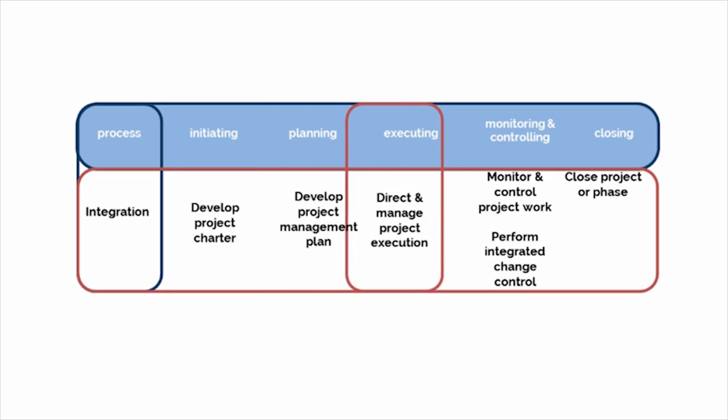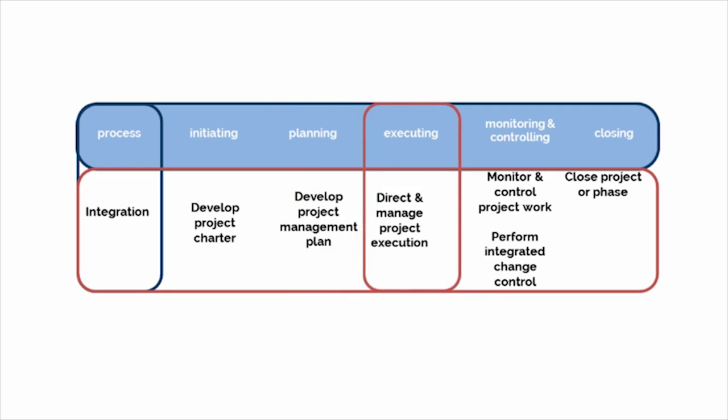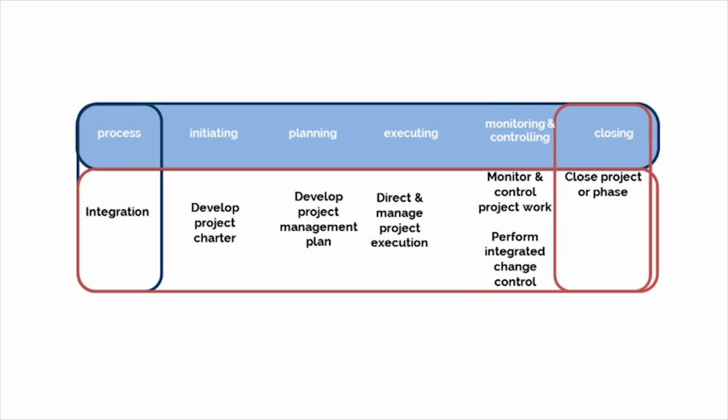Moving on through this integration knowledge area, the executing process group is direct and manage project execution. The monitoring and controlling process group contains two processes: monitor and control project work, and perform integrated change control. And in the closing process group, we have close project or phase.